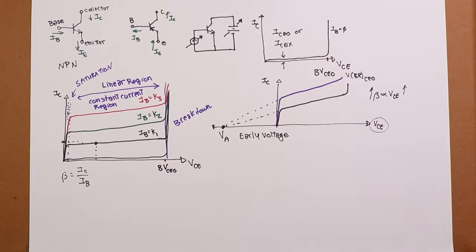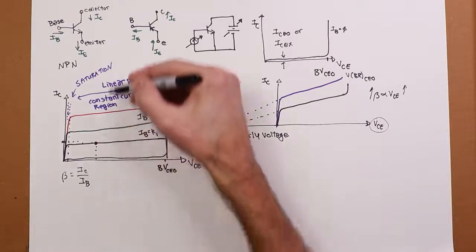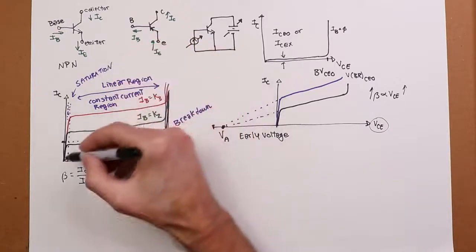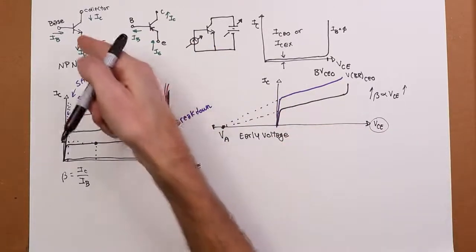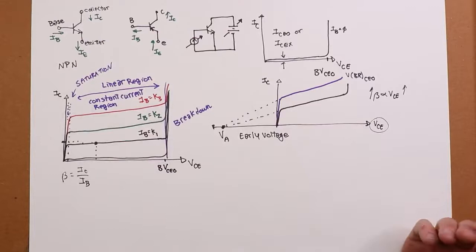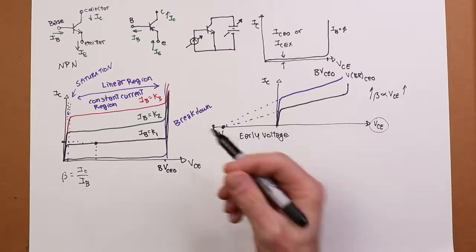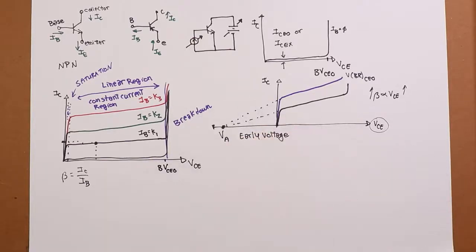Okay. All right. These curves will continue up to some point where, obviously, we're going to reach either the current limit of the transistor or the power limit of the transistor. Beyond that, all bets are off. We don't have a transistor anymore. We have a charred piece of something.